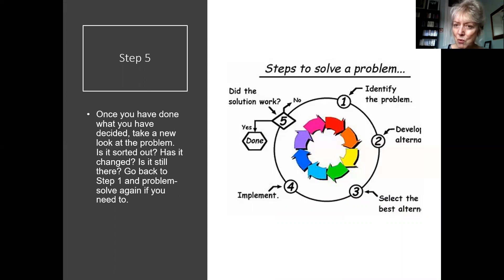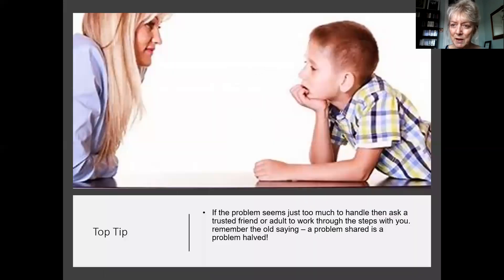So think about the problem, be more specific. Find out what the pros, the cons are of each of the solutions that you've brainstormed and then implement. Have a go, try it out, pick out the one that you think is going to work the best. If it didn't work, then start again. So you can see it's a cycle, a problem-solving cycle, step by step.